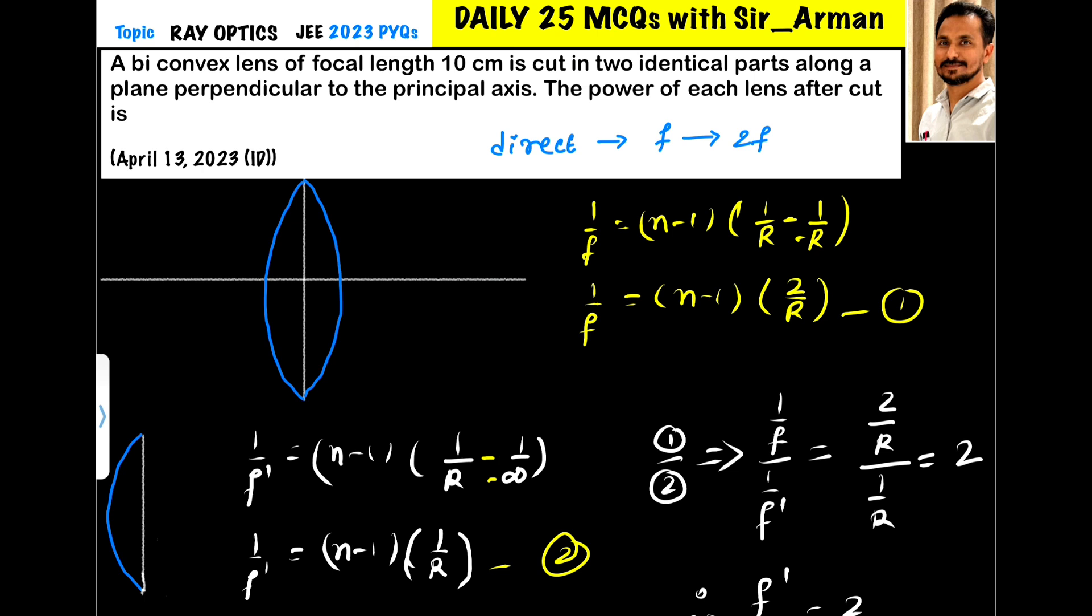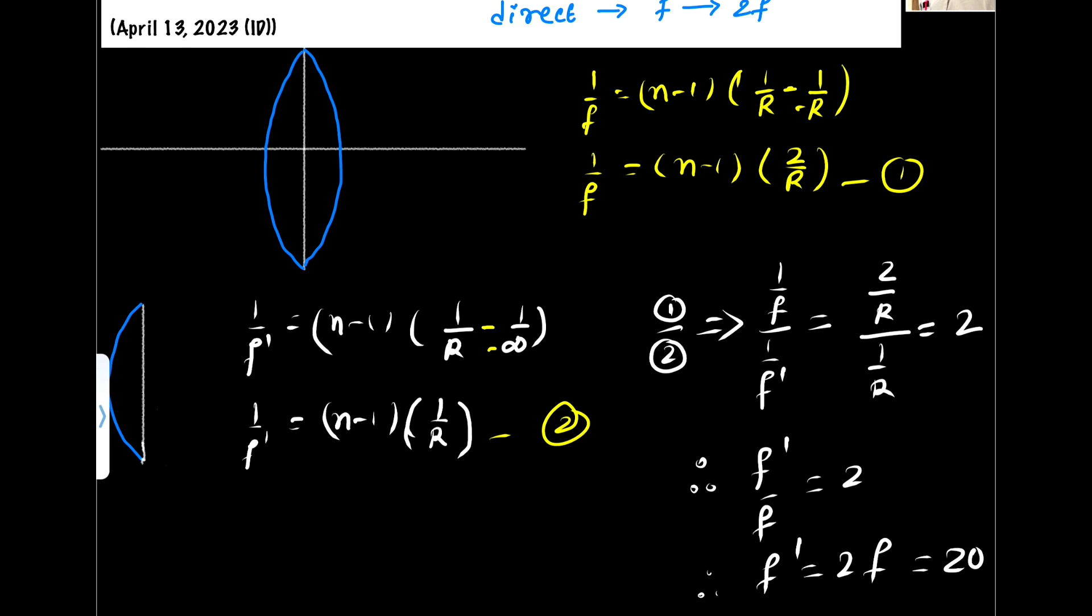On solving we will get 1 upon f equals n minus 1 into 2 by r. Now if we cut this part, then we have a plano convex lens whose second part has a radius infinite. Again using the same equation, 1 upon f dash equals...